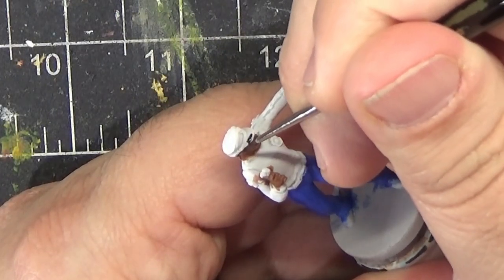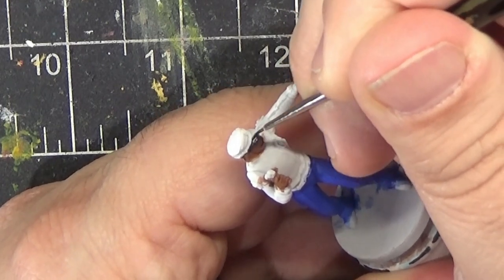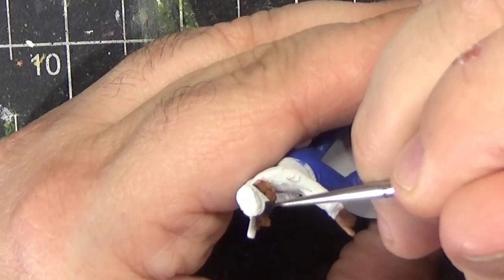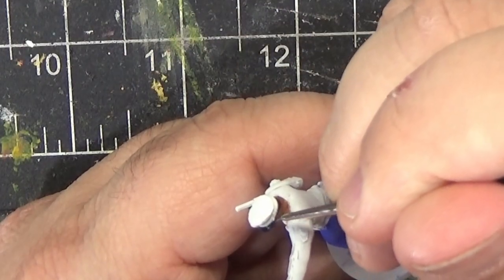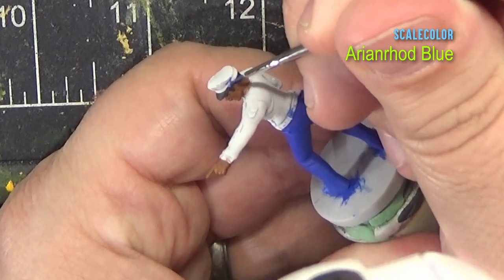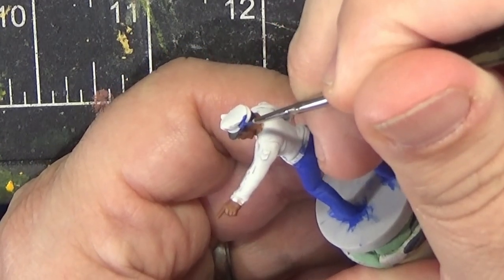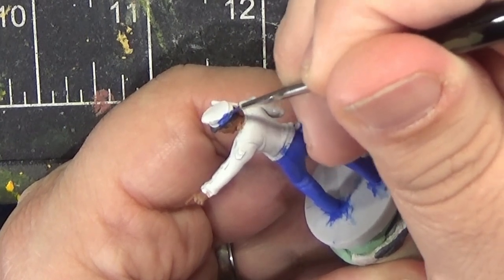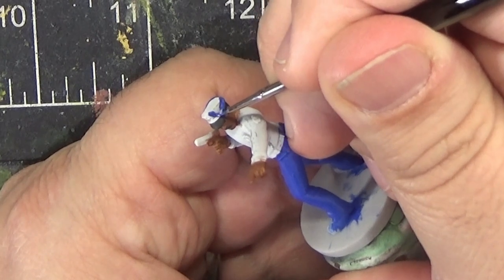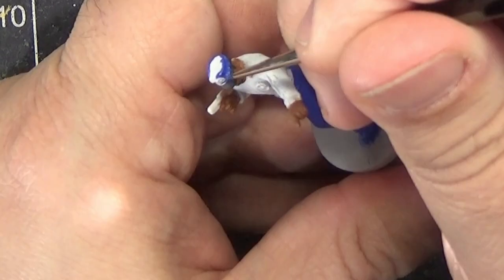While I have the black on my brush, I'm going to paint the brim of the hat. And then we'll finish up the rest of the hat by returning to Aryan Rod Blue, the same color as the pants. Be careful around the badge—you don't want to get any of the blue there because it'll be hard to cover up with yellow later.